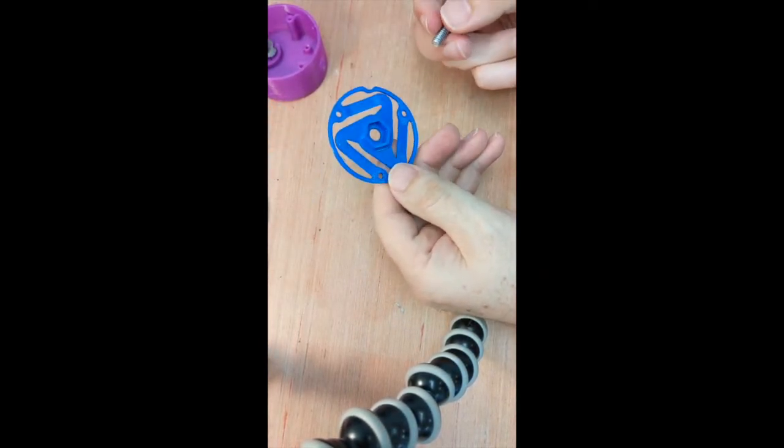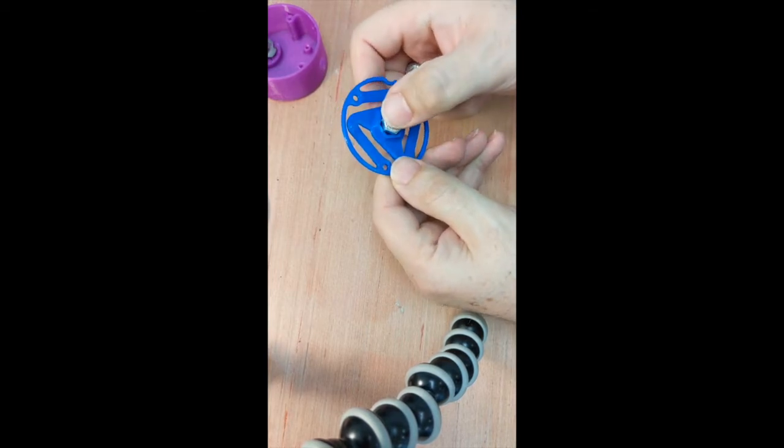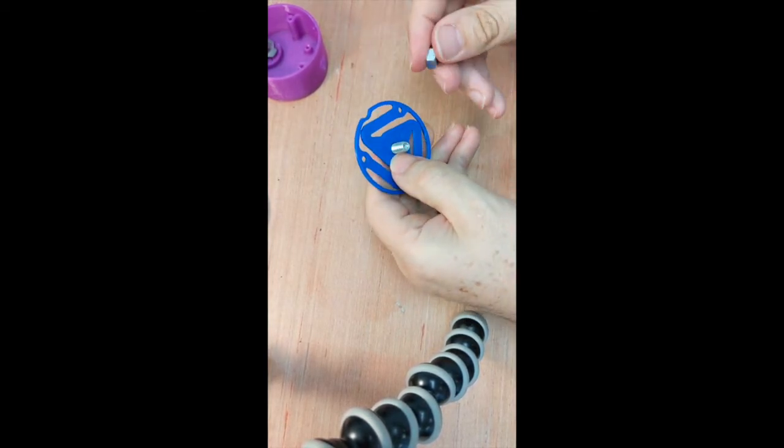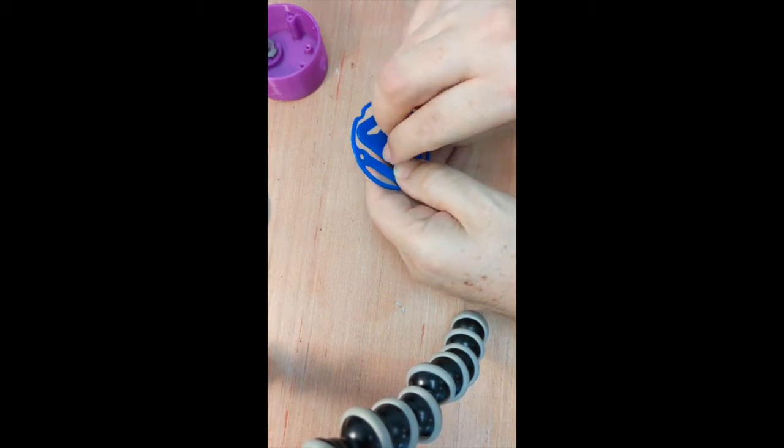Next, insert the hex bolt through the 3D printed flexure and tighten it with the hex nut from the other side. Make sure you insert the bolt from the correct side.